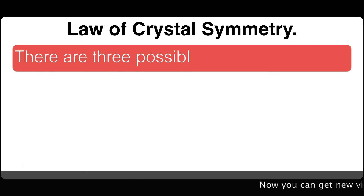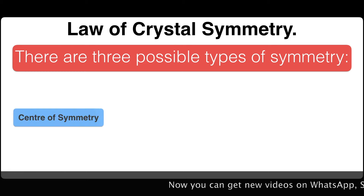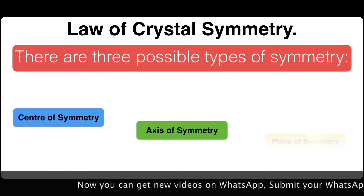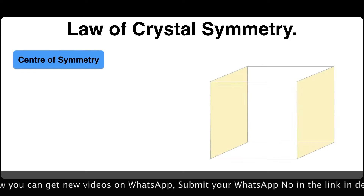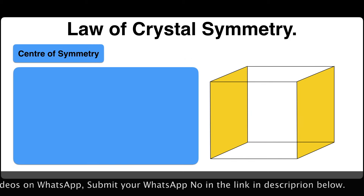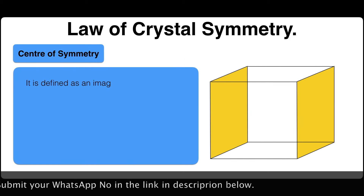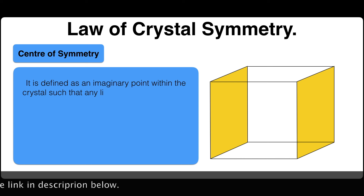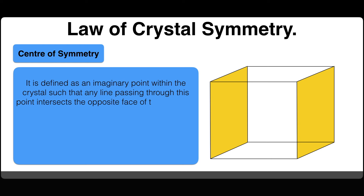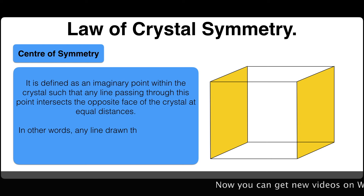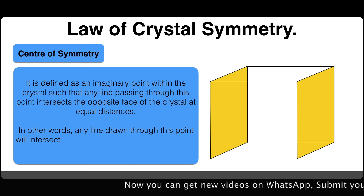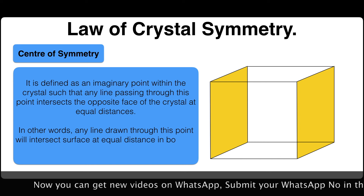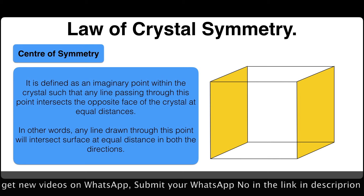There are three possible types of symmetries: center of symmetry, axis of symmetry, and plane of symmetry. The center of symmetry is defined as the imaginary point within the crystal such that any line passing through this point intercepts the opposite faces of the crystal at equal distances. In other words, any line drawn through this point will intersect the surface at equal distances in both directions.